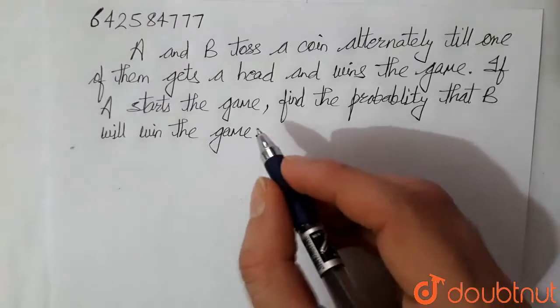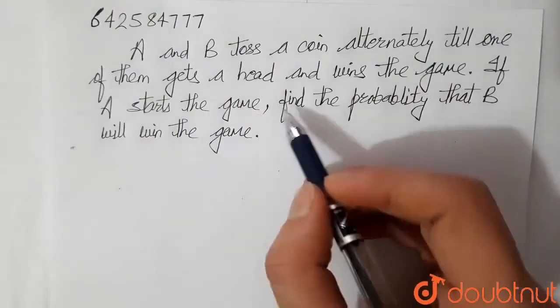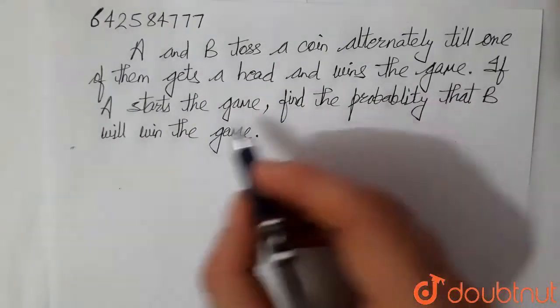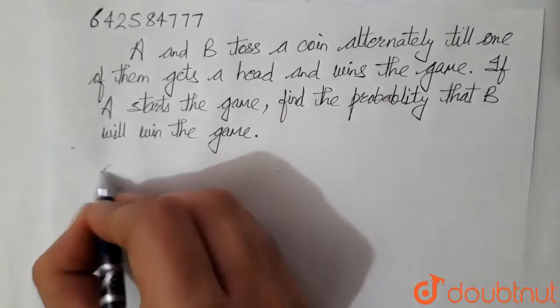Hello students, so the question is A and B toss a coin alternately till one of them gets a head and wins the game. If A starts the game, find the probability that B will win the game. Okay, let's look at the solution.